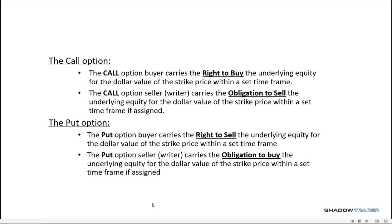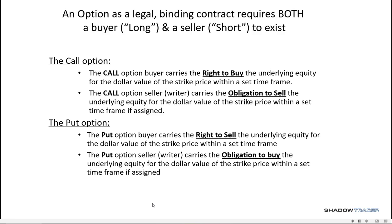We also have the other side of the coin called the put option. The put option carries the right to sell — you have the right to sell the underlying equity for the dollar value of the strike within that time frame to expiration. And the put option seller carries the obligation to buy. Once again, an option as a legal binding contract requires both a buyer and a seller for it to exist. Side note: when you see volume on the option chains, this volume is that buy and sell as a single entity.